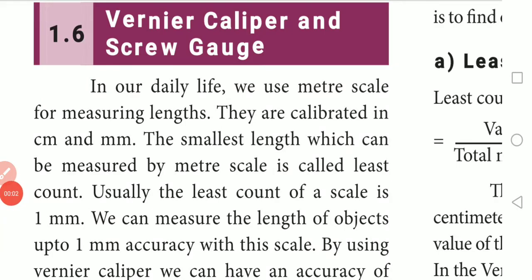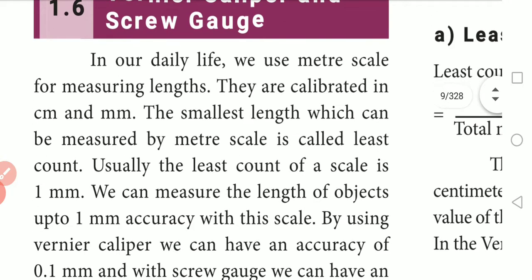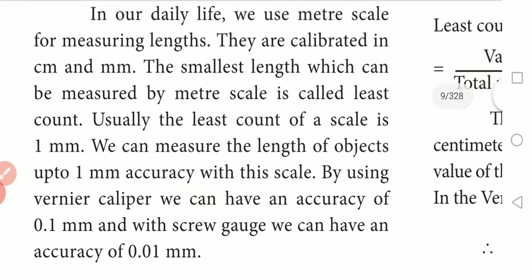Dear students, I would like to talk about the first lesson on measurement — specifically the vernier caliper and a screw gauge. In our daily life we use a meter scale for measuring length, which is calibrated in centimeters and millimeters. The smallest length which can be measured by a meter scale is called the least count.